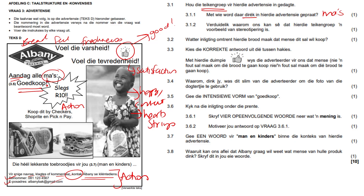Verduidelik waarom ons kan sê dat hierdie teikengroep 'n voorbeeld van stereotyping is. What is stereotyping, and why is this an example of it? It's because not all homes always have a mom. In some households, the father is in charge of packing your lunch and making your sandwich. So therefore that's a stereotype because the advertisement just assumed and generalized — this is the gender role. Moms do this, not dads. So it's a form of stereotyping.